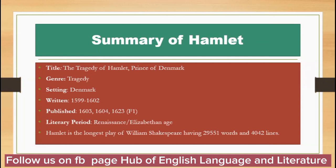Its full title is The Tragedy of Hamlet, Prince of Denmark. It's a tragedy. The setting is in Denmark. It was written in 1599 to 1602 and was published three times — first in 1603, second in 1604, and third in 1623. The literary period is called the Renaissance or Elizabethan Age. Hamlet is the longest play of William Shakespeare, having 29,551 words and 4,042 lines.